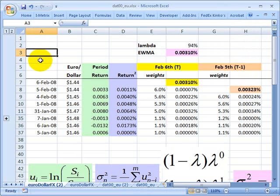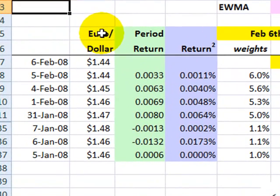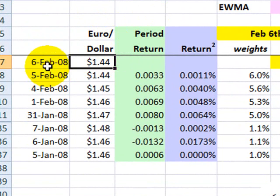So to explain this approach, I'm going to use the same data that I used to calculate simple volatility, and that was a historical series of exchange rates between the euro and the dollar, such that on February 6, the one euro purchased approximately $1.44 in US dollars.